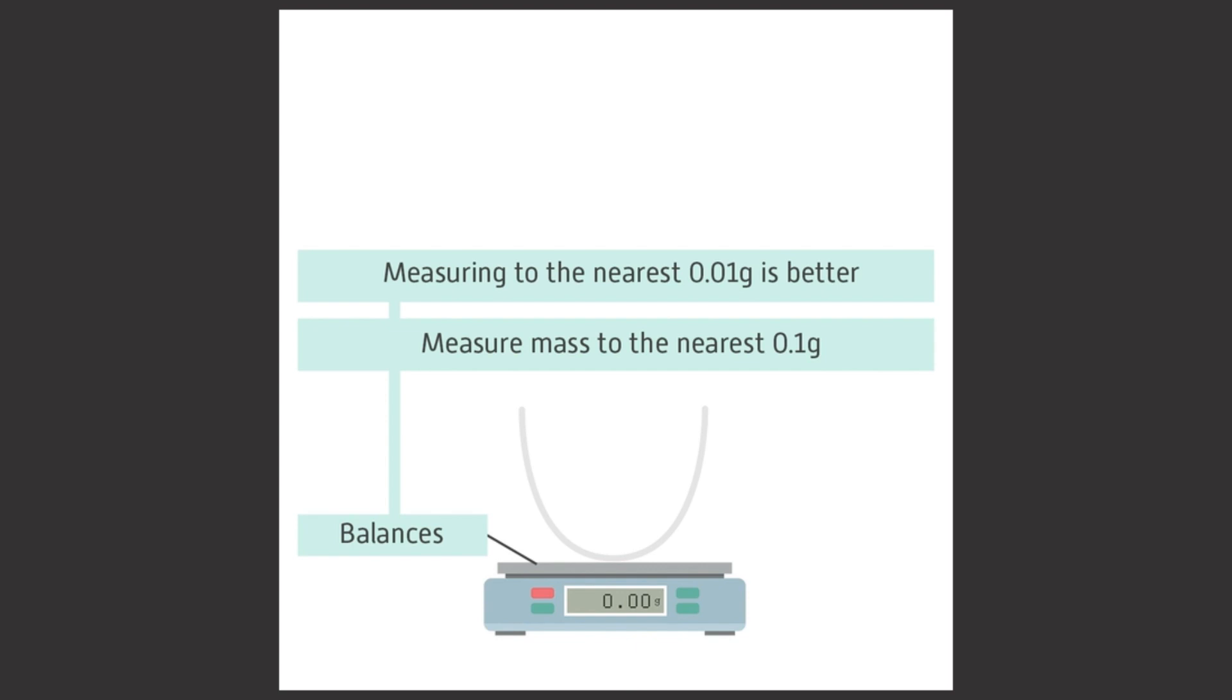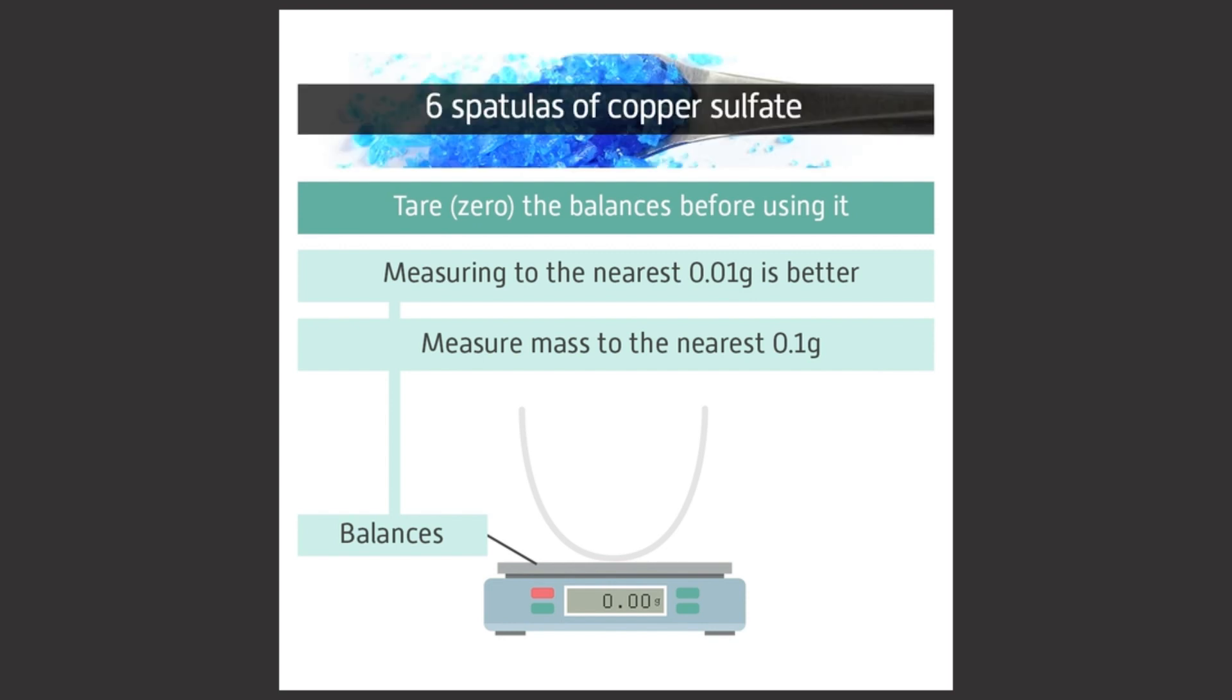Record the mass of an empty crucible. You will need to use balances that measure mass to at least the nearest 0.1 gram, but to the nearest 0.01 gram is better. Remember to tare or zero the balance before you use it. Then you need to add six spatulas of copper sulfate and record the new mass.